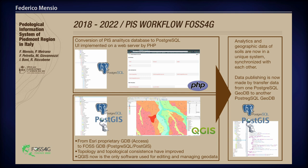In particular, with this transition we improved the topology and topological consistency of our geographical data. QGIS is now the only software we use for editing, updating, and managing geodata. This process permits having one unique system for analytics and geographic data of soils, synchronized with each other.